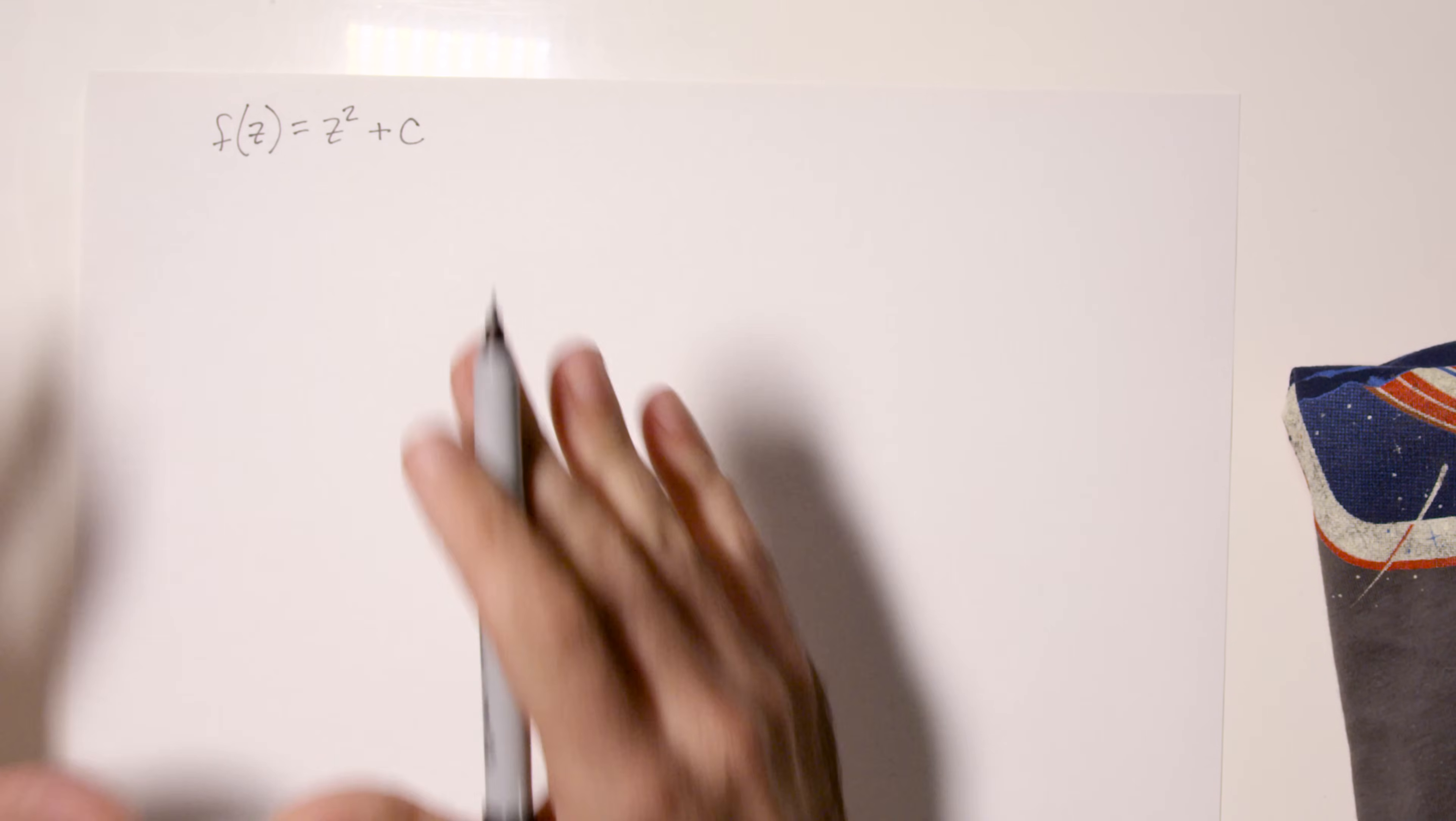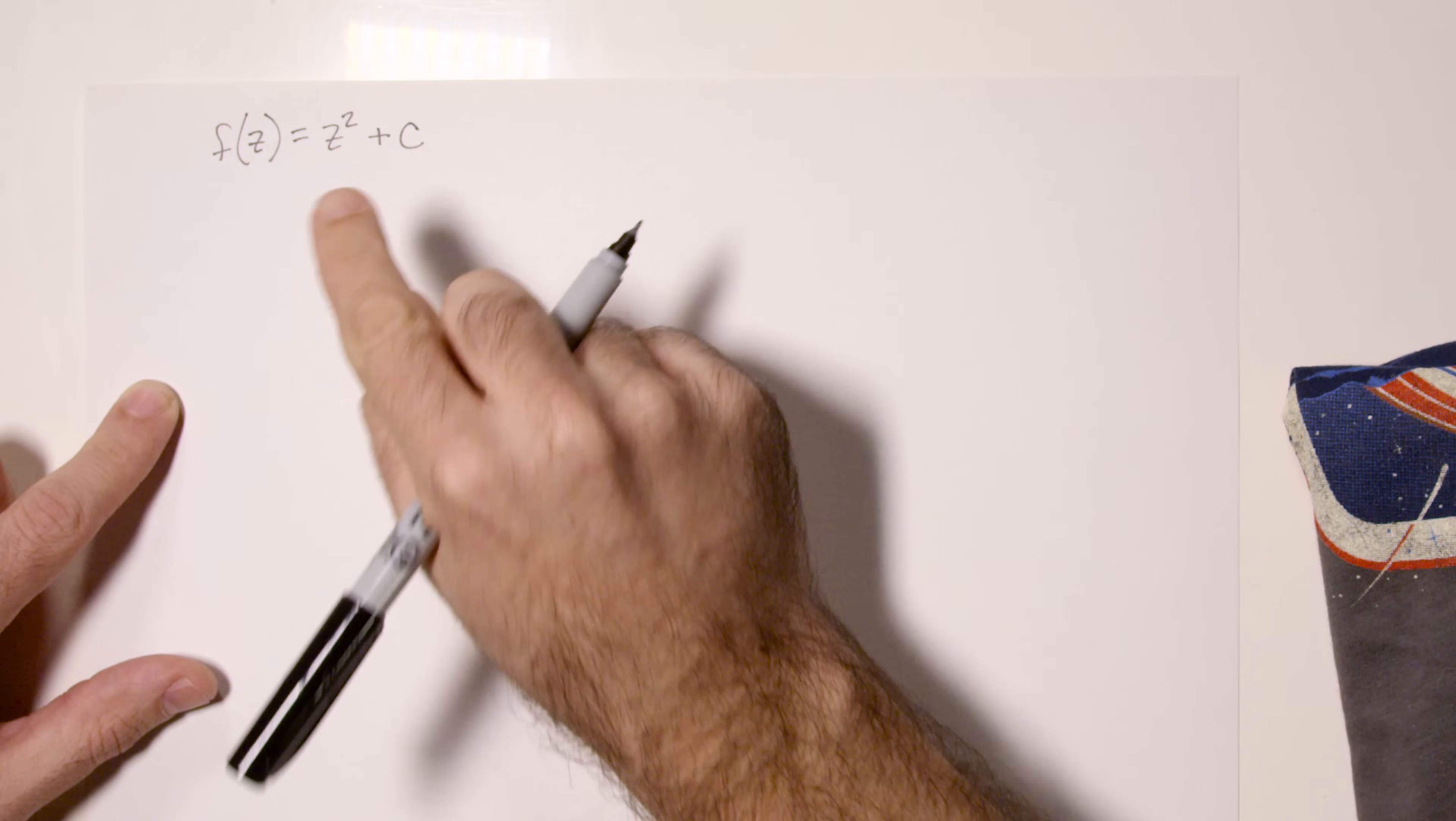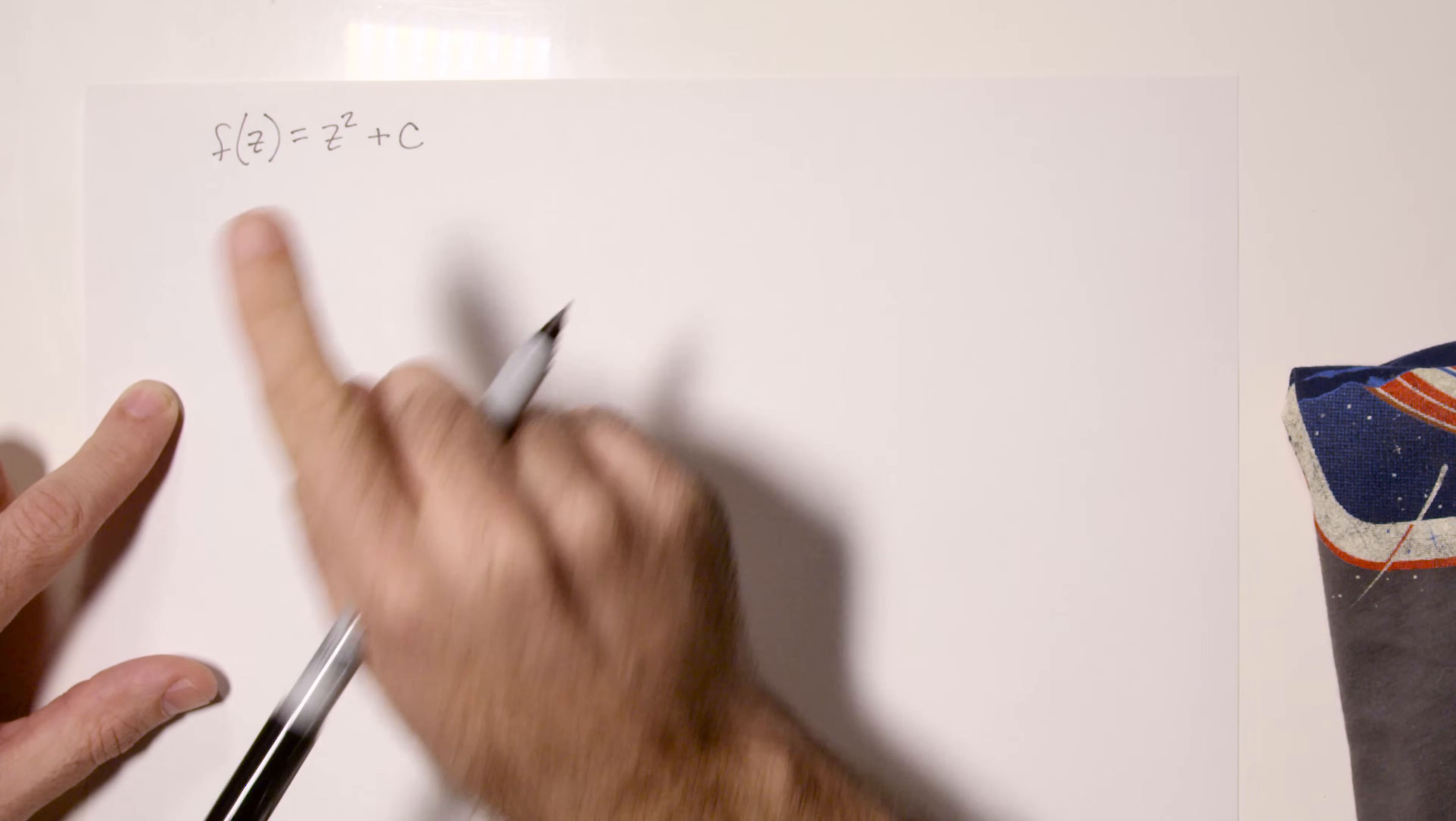What you have to do though is you have to start this with z equal to zero and you need to iterate this function. And if the value that we keep getting out just grows bigger and bigger without bound, the number is not in the set. If, however, the number sort of stays somewhat small and doesn't grow to infinity, then the number belongs in the set. Let's do some examples.